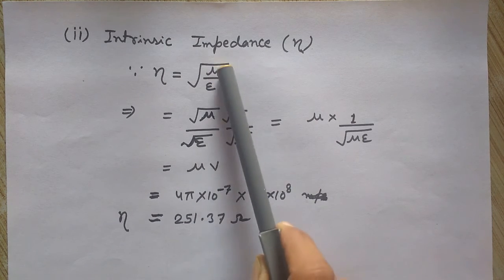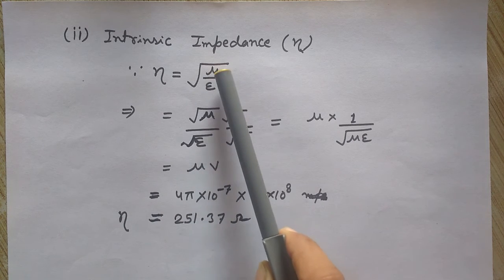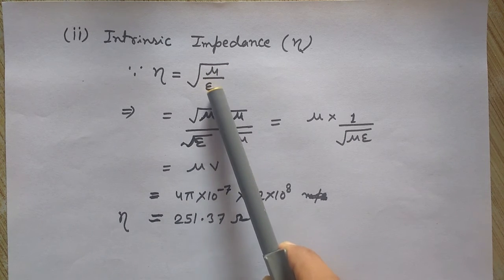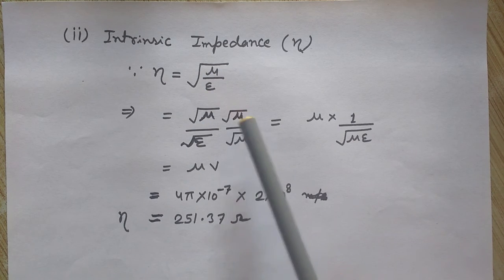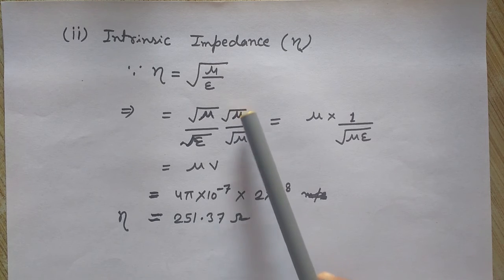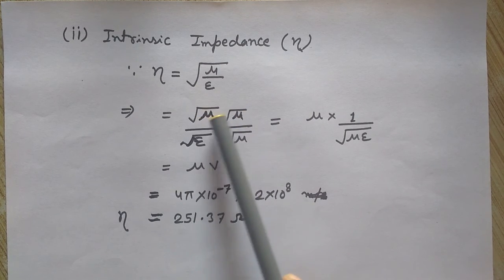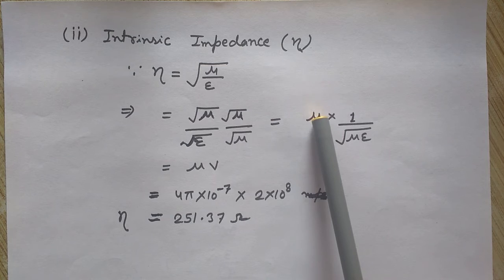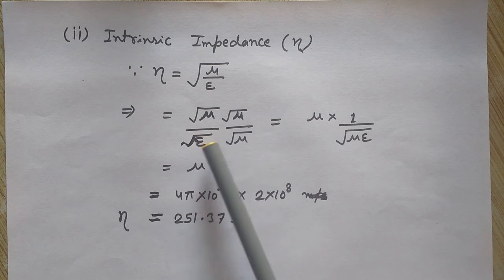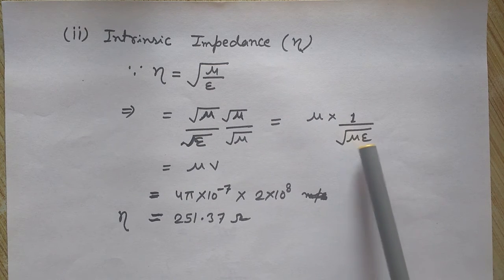I can write this as √μ / √ε. Now multiply and divide by √μ. You can see √μ × √μ = μ, and this can be written with √(με) in the denominator.